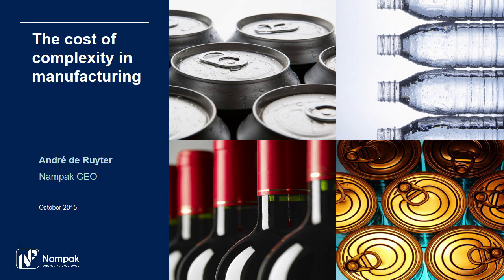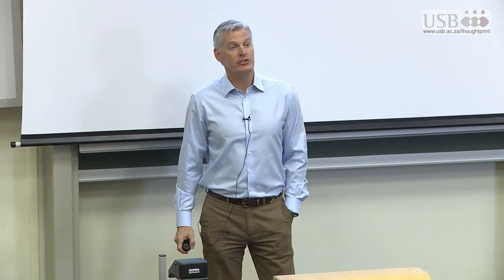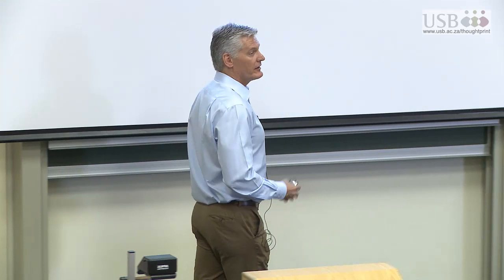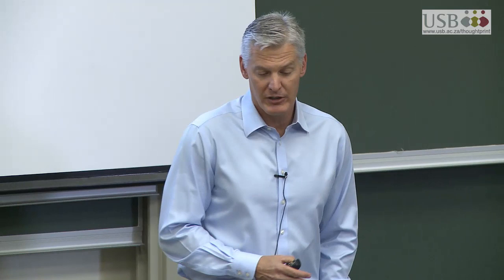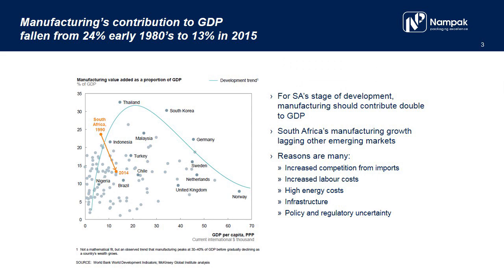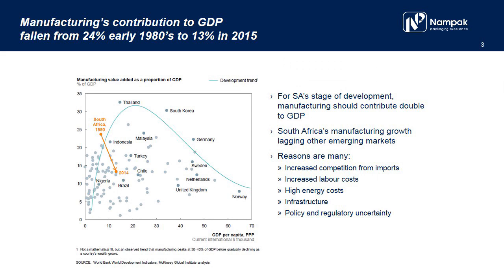Manufacturing in South Africa is in a tough spot at this point in time. What I want to share with you today are some ideas that we have at NAMPAC as to how we think we can simplify, standardize, and in the process save. The contribution that manufacturing makes to GDP is quite low from where it was in the 1980s — it used to be at 24% and it's now come down to under 13%. This is a very interesting McKinsey graph that points to manufacturing as a percentage of GDP versus GDP per capita. According to this graph, this is where South Africa is sitting today and this is where South Africa was in 1990.